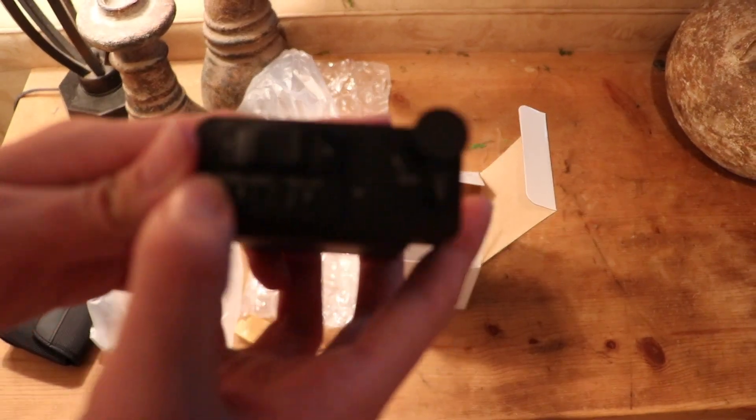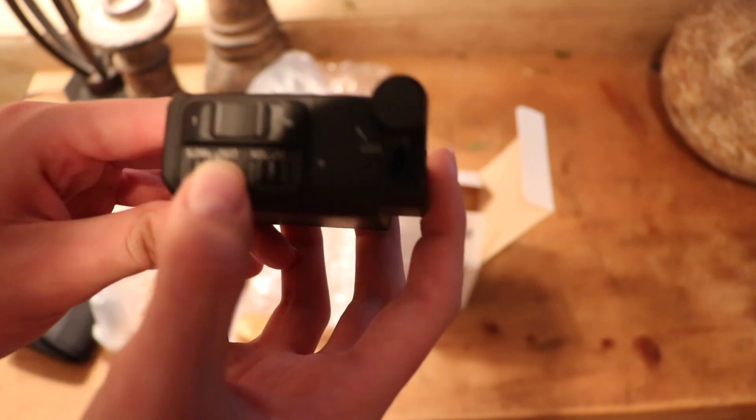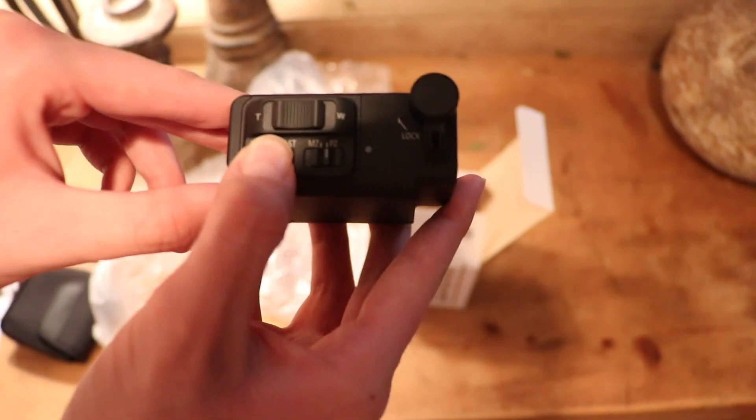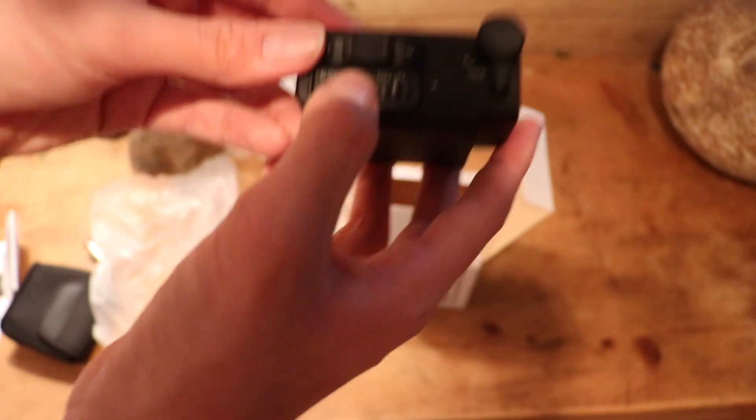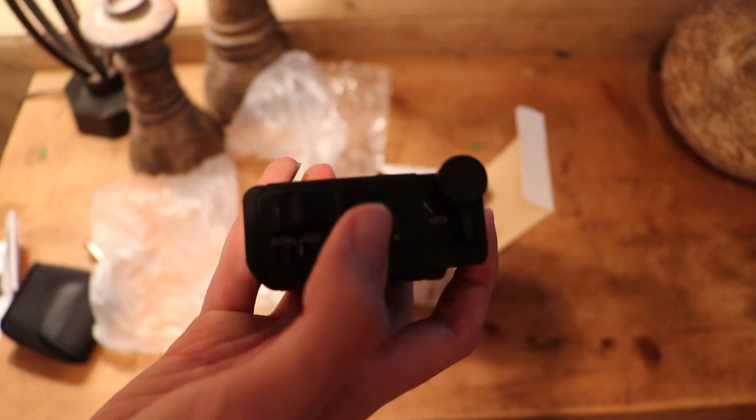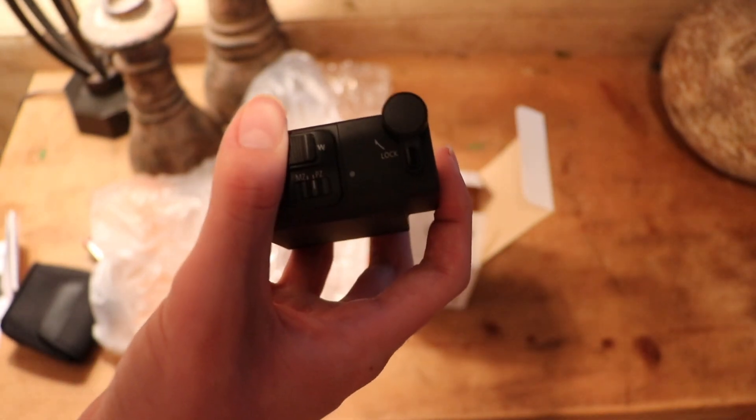So, you have your different zoom speeds right here. You have fast and slow. I think slow is about 4 seconds for the full range, and fast is about 10 seconds. I mean, fast is about 4 seconds, and slow is about 10 seconds.